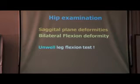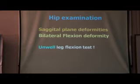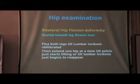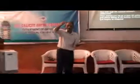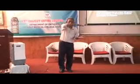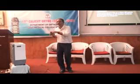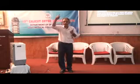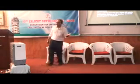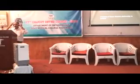In a bilateral case, you don't have a normal side. What you do is flex both thighs together onto the pelvis until the lumbar lordosis is obliterated. Put your palm facing upwards under the lumbar lordosis, flex both thighs together until the lordosis is obliterated. Then get an assistant or get the patient to hold one thigh and extend the other thigh one at a time — extend until the lumbar lordosis begins to reappear, stop, and measure the angle. Then put it back and do the other side.